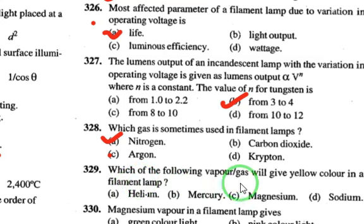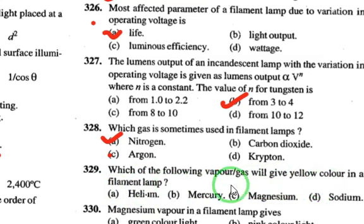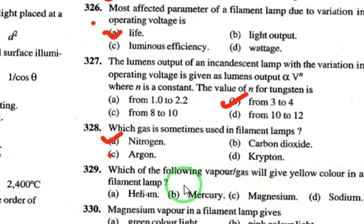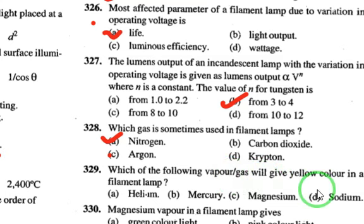Which of the following vapor gases gives yellow color in a filament lamp? The answer is sodium.